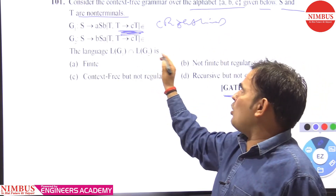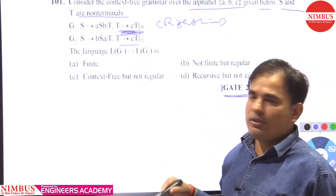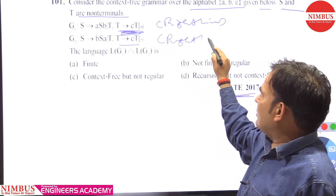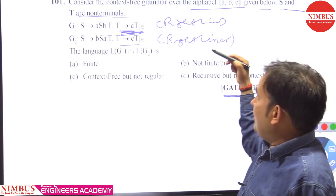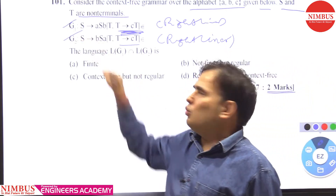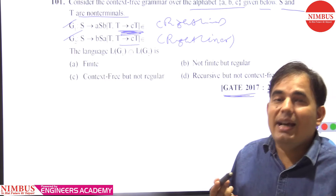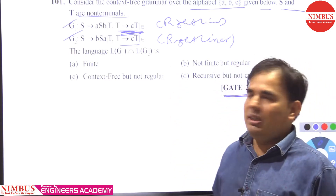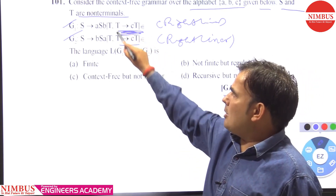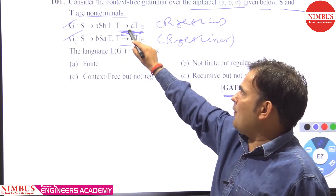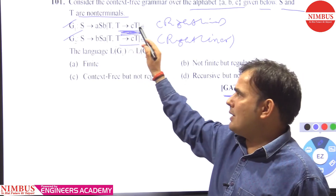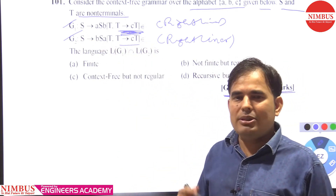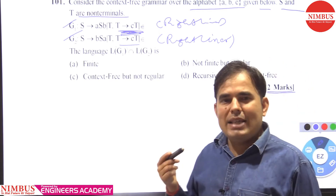In G2 also, a right-linear production is present, so it is also right-linear. This means G1 and G2 are both regular languages. Remember this concept in TOC — both grammars contain right-linear productions, so both grammars belong to regular grammar.